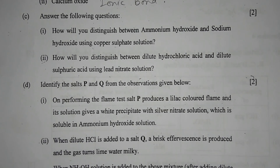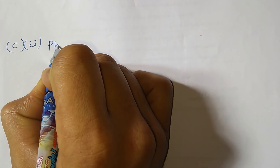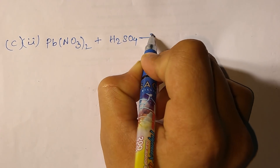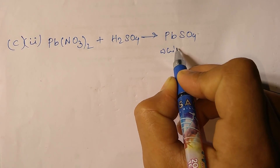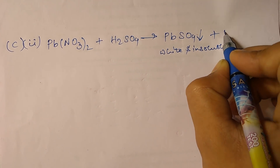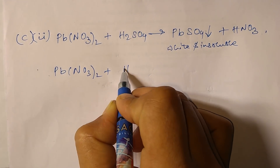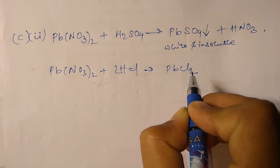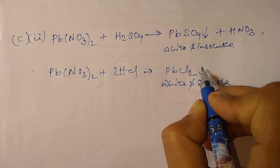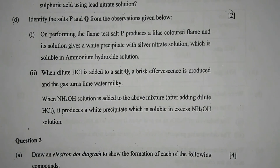Number 2: how will you distinguish between dilute hydrochloric acid and dilute sulfuric acid using lead nitrate solution? Lead nitrate reacts with sulfuric acid to give a white and insoluble precipitate of lead sulfate plus HNO3. Whereas lead nitrate reacts with hydrochloric acid to produce a white and insoluble precipitate of lead chloride plus HNO3.